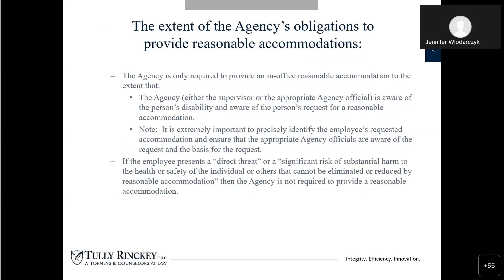The extent of the agency's obligation to provide a reasonable accommodation: the agency is only required to provide a reasonable accommodation to the extent that the agency is aware of the person's disability and aware of the person's request for reasonable accommodation. So they can't just see you struggle — you have to actually ask for something. You don't need to use the term 'reasonable accommodation' specifically, but you do need to voice that you need some assistance.